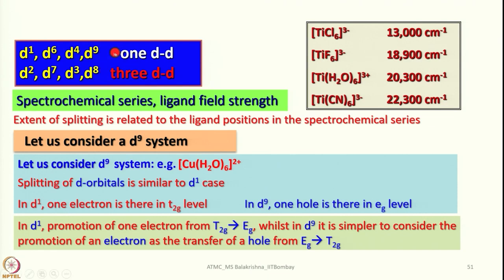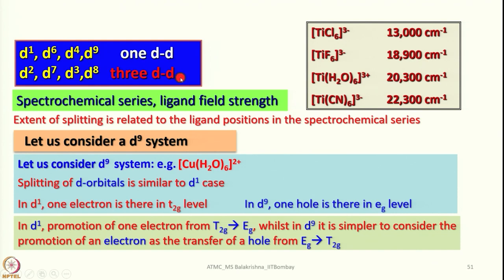I want to bring out similarities between electronic configurations D1, D4, D6, and D9 — which are one electron, one more than half-filled, one less than half-filled, and one less than completely filled — and D2, D7, D3, D8. In the case of D1, D6, D4, D9, we see exclusively one d-d transition, whereas in the case of D2, D7, D3, D8, we see three d-d transitions, which are Laporte-allowed due to mixing and are spin-allowed.